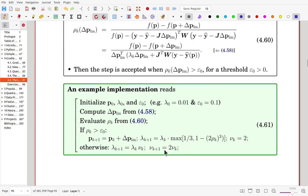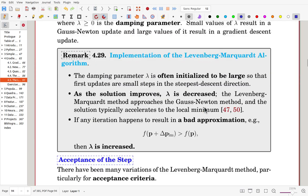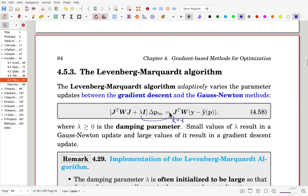So along with that, the algorithm can be implemented in this way. We start with initialization for initial direction and lambda_0, that is a damping parameter, and epsilon_0 is the threshold. And for example, lambda_0 can be 0.01 and epsilon_0, the threshold is 0.1. Now we compute the correction vector. The correction vector will be computed from that equation by inverting this matrix.